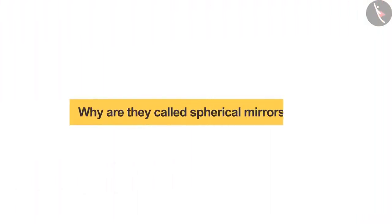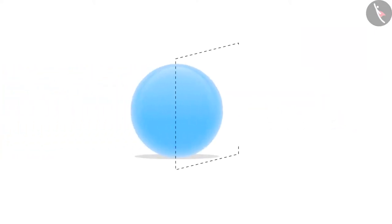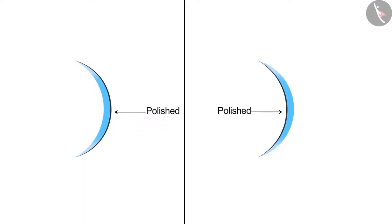Why are they called spherical mirrors? Let us understand why. Take a large sphere and cut it in such a way that we get spherical arc-like shapes. These shapes can be polished in either of the ways to make a mirror.